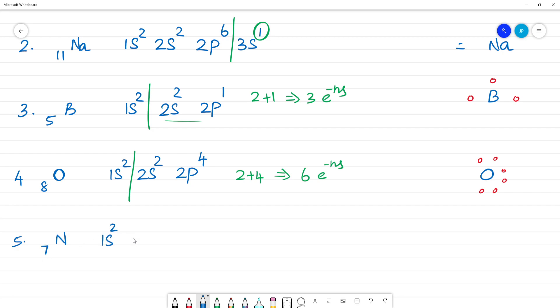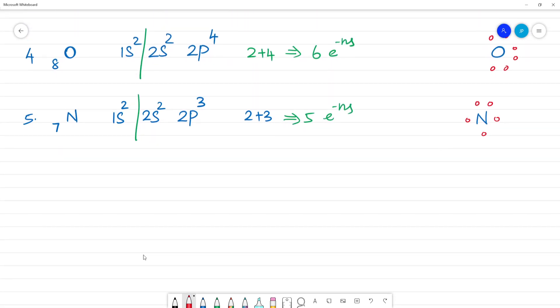Electronic configuration: 1s², 2s², 2p³. If you look at the valence electron, 2 plus 3, that equals 5 electrons. If you look at the nitrogen Lewis symbol, there's a lone pair of electrons. This is 1, 2, 3. Next step, how is bromine?